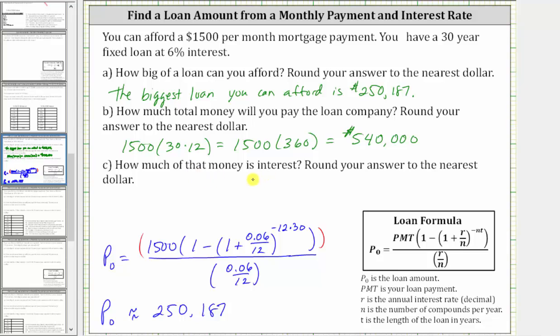And for Part C: How much of that money is interest? To determine the total interest, you take the money that you paid, which is $540,000, and subtract the loan amount of $250,187. And $540,000 minus $250,187 is equal to $289,813.